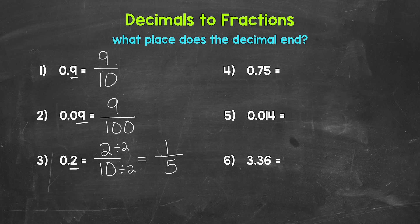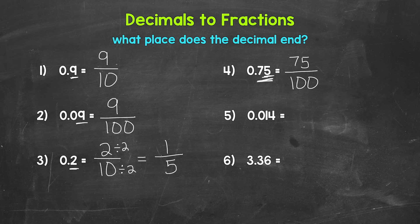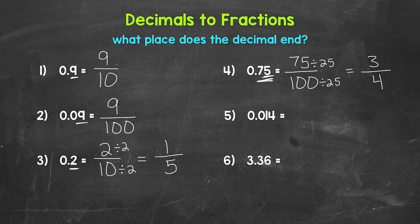Let's move on to number four, where we have 0.75, 75 hundredths. Here we have 75 to the right of the decimal, and this decimal ends in the hundredths place, so 75 is our numerator and 100 is our denominator. 75 over 100, 75 hundredths. We have a greatest common factor of 25: 75 divided by 25 gives us 3, and 100 divided by 25 gives us 4. So we get 3 over 4, three fourths — that's in simplest form.